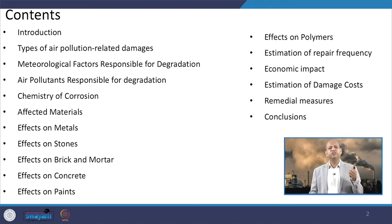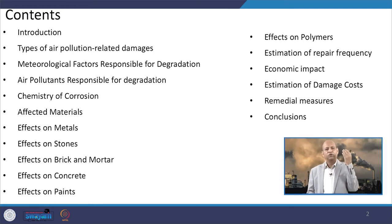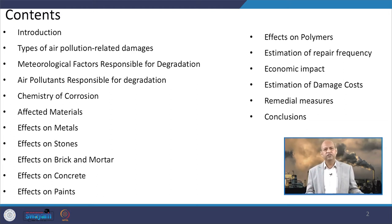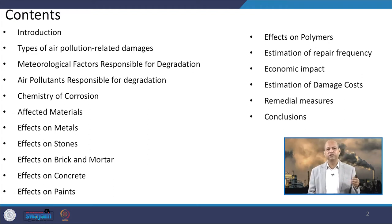We will also see the effects on different kinds of material — like on metals, stones, what kind of effects are there. We will also see on brick and mortar, effects of air pollution, and then on concrete, paints, polymers, etc. Then we will see how repair frequency is estimated by cost parameters and the economic impact, estimation of damage cost, and then the remedial measures, and we will conclude accordingly.